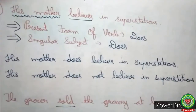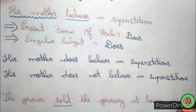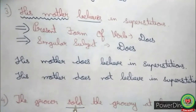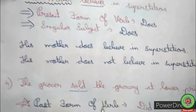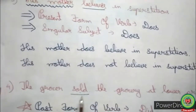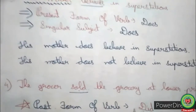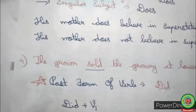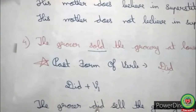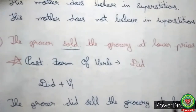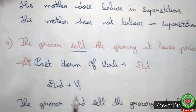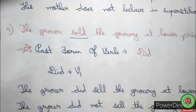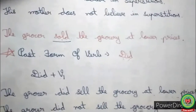Look at the fourth sentence: 'The grocer sold the grocery at lower prices.' 'Sold' is the past form of the verb. Children, whenever the past form of a verb is given, we always add 'did' as a helping verb, in the form: did + present form of verb. After adding 'did,' the sentence becomes: 'The grocer did sell the grocery at lower prices' — that is, 'sold' has been changed to 'did sell.' Now adding 'not,' the sentence becomes: 'The grocer did not sell the grocery at lower prices.'